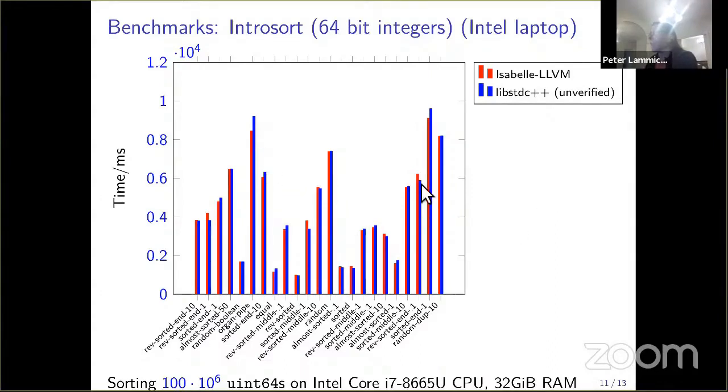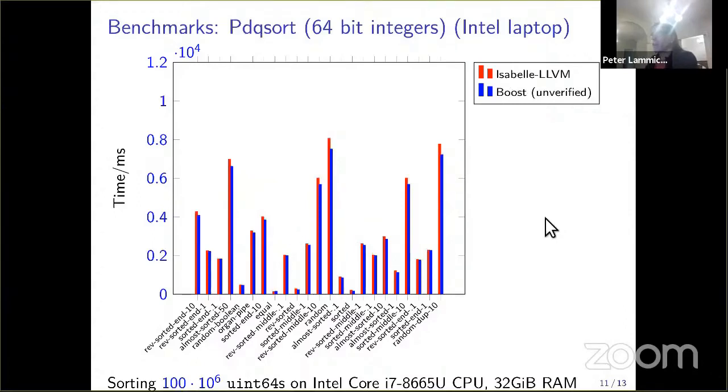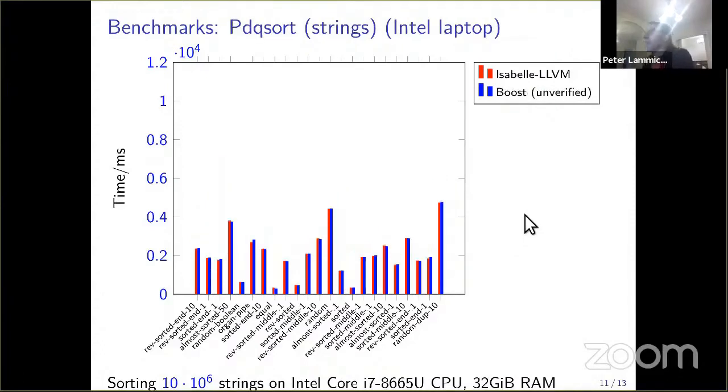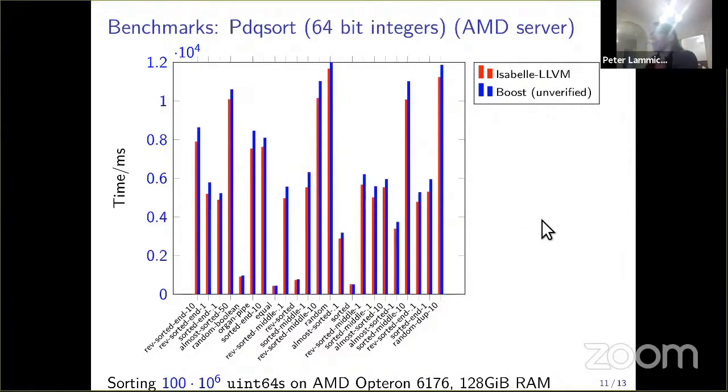The red bars are the runtime of the verified algorithm. The blue bar is the runtime of the unverified algorithm from the C++ library. You see we are pretty close together. Sometimes we are even faster, sometimes the other one is faster. But in general, we are pretty close together. The same for PDQ sort and for strings for both algorithms. This was on an Intel processor.